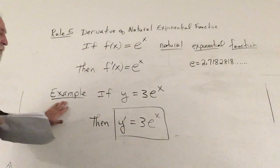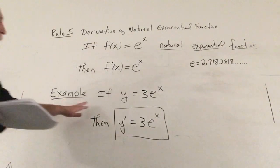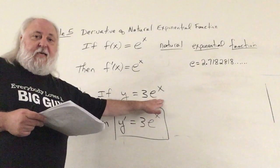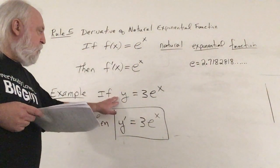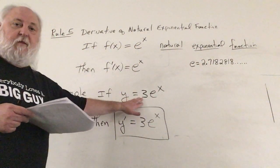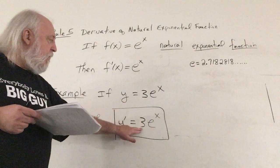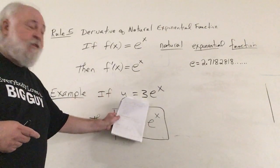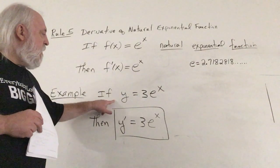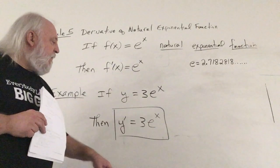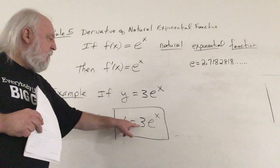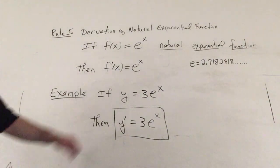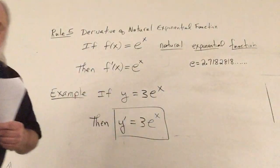In our example from your note packet, we have the function y is equal to three times e to the x. To find this derivative, three is a multiplicative constant — we just carry it along. When we take the derivative of e to the x, we get e to the x. So if y is equal to three times e to the x, then y prime is equal to three times e to the x. Very simple.